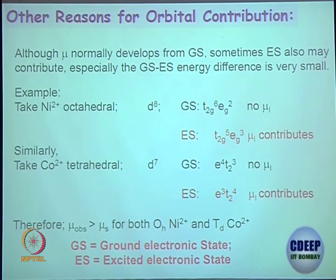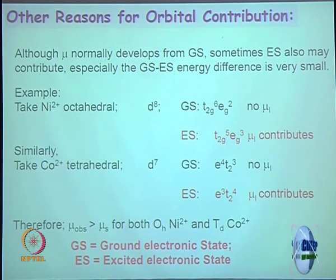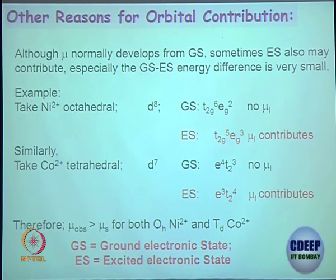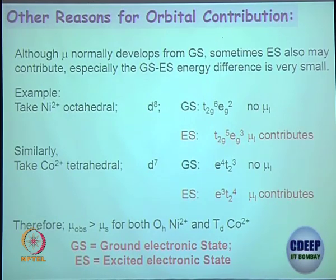Other reasons for orbital contribution: we are usually focused on the ground state electronic configuration. Sometimes, for example with t2g6eg1, there should be no orbital contribution. But if you can excite one electron from the t2g level to the eg level — promoting from t2g6eg1 to t2g5eg2 — you can induce orbital angular momentum. That is where excited state contributions come in, though they will not be as high as ground state contributions.